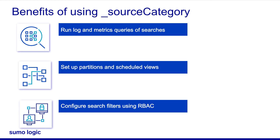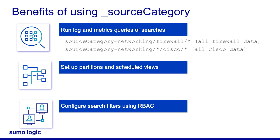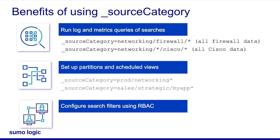Using the naming convention described here allows you to easily and effectively define the scope of your search. You can also use wildcards to define your data scope as partitions or indexes to improve performance. You can also create a partition by applications such as prod, networking, or sales users slash strategic slash my app.